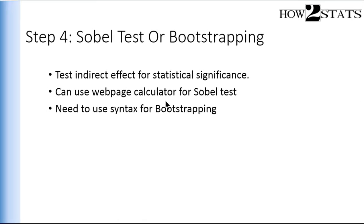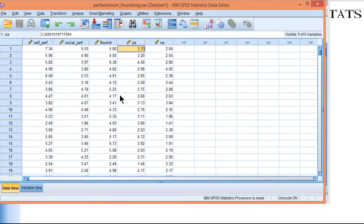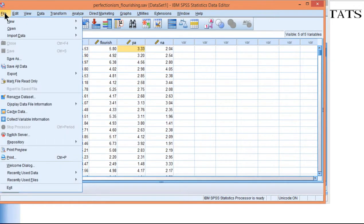Not everyone favors the Sobel test — some argue bootstrapping should be used to estimate the statistical significance of an indirect effect, since bootstrapping doesn't assume normality. To run a bootstrapped analysis in SPSS, you need the syntax file referenced in the textbook. Once you have that syntax file open in SPSS, you need a data file containing only the three variables of interest.